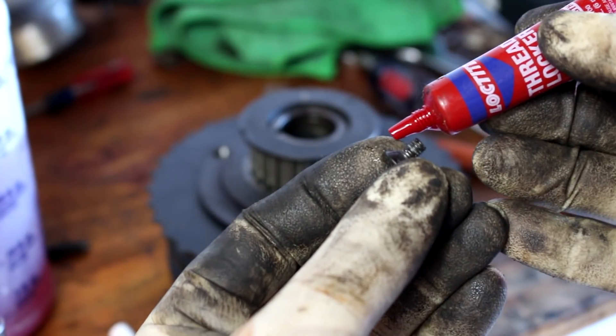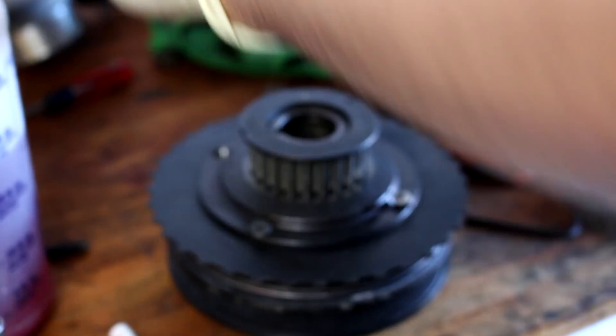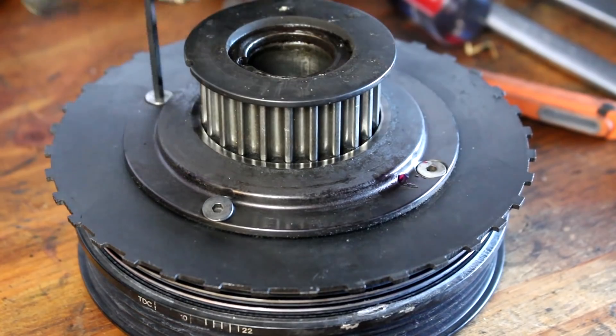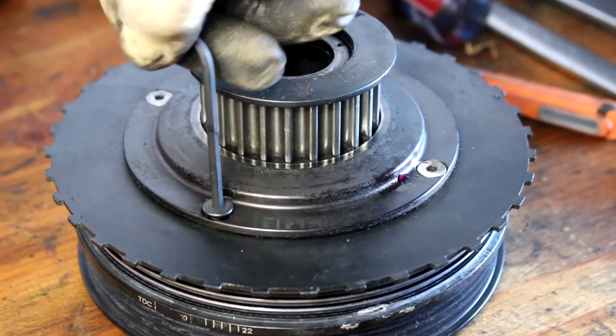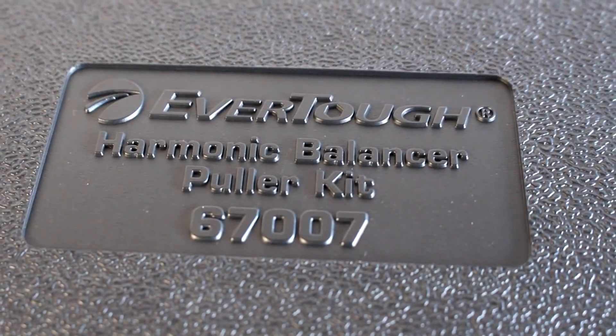Since I had to remove my ATI damper to replace the front main seal, I took the time to clean off the bolts that hold the trigger wheel in place and throw a good amount of red Loctite on there. Another option here is to tack weld the trigger wheel to the damper, but Car Passion does not have a welder yet, but man, does that need to happen soon. Side note here, if you have the ATI damper, this is the puller type that you have to use.